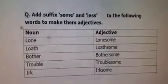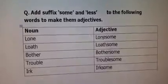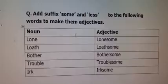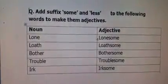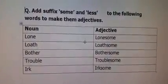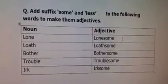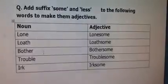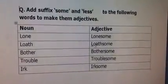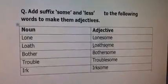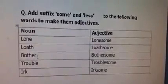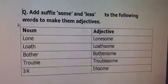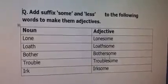The first word is lone. Lone means tanha. When we add -some with lone, it becomes lonesome. Lonesome means tanhai wala. Next word is loth. Loth means nafrat. When we add -some with loth, it becomes loathsome. Loathsome means qabil-e-nafrat. And next, bother. Bother means tang karna. When we add -some with bother, it becomes bothersome. Bothersome means tang karne wala.